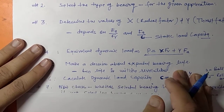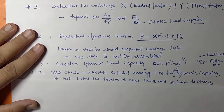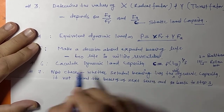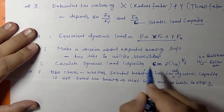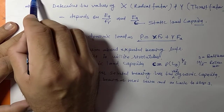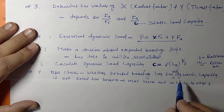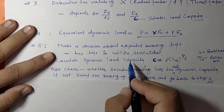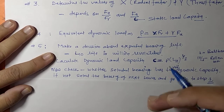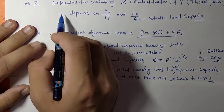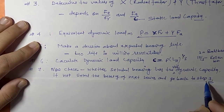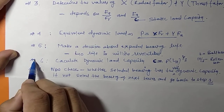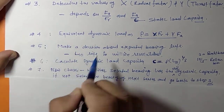We then check whether the selected bearing has the required dynamic capacity calculated in the previous step. If it does not meet the requirement, we select a bearing from the next series and repeat the calculation from step 3. This is a trial-and-error method to select the bearing.